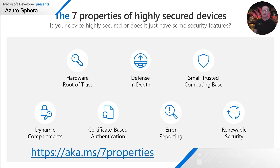Microsoft and the industry have identified seven properties required to build highly secure devices. It's not my intention to go through all of these blow by blow. You'll see a link at the bottom — aka.ms/sevenproperties — do check that out to have a better understanding of the properties required for building highly secure devices.